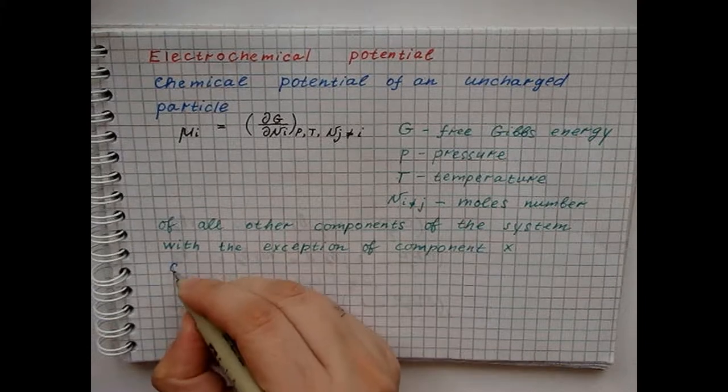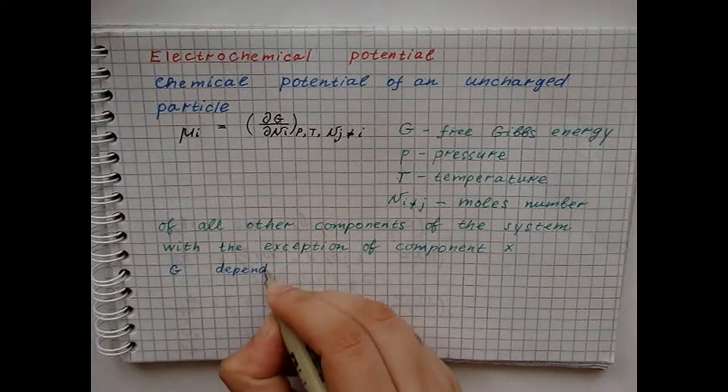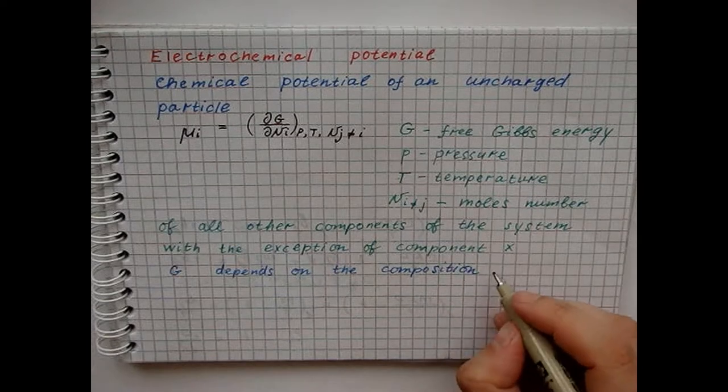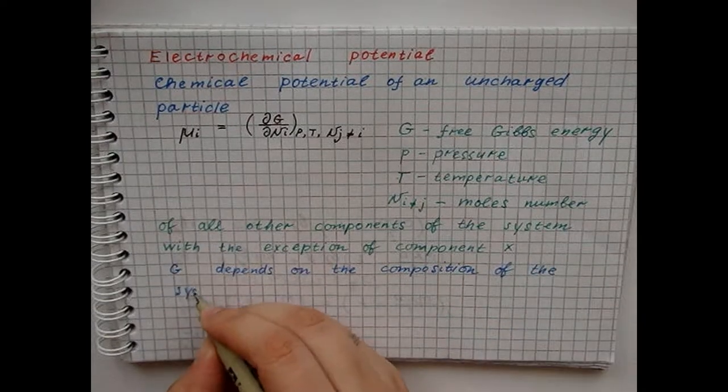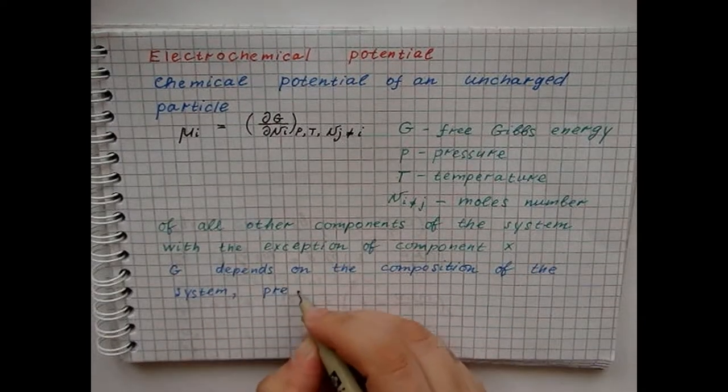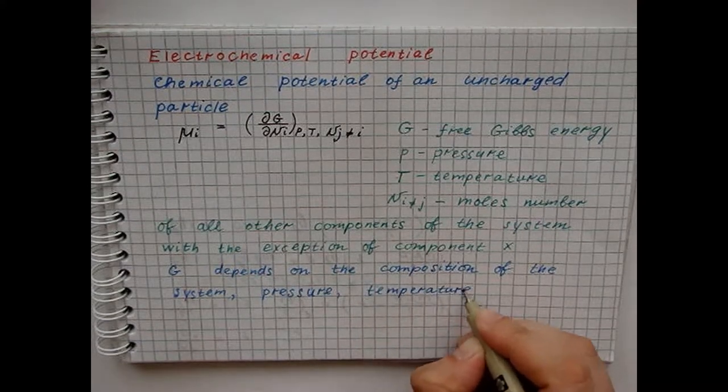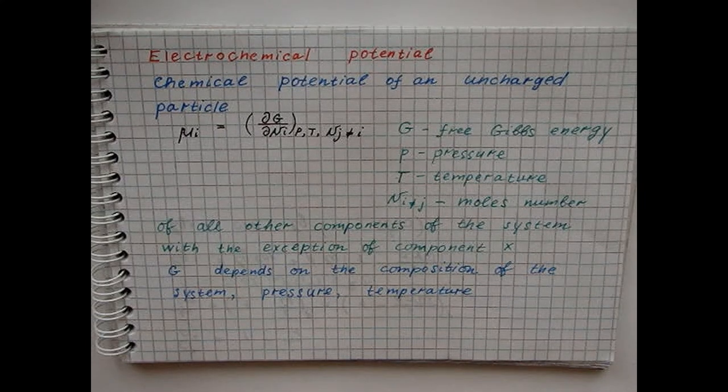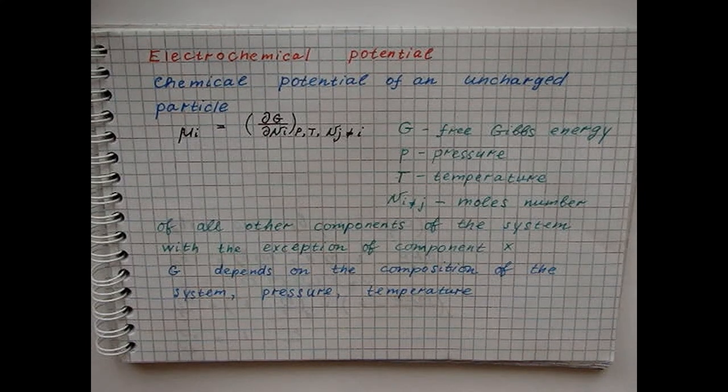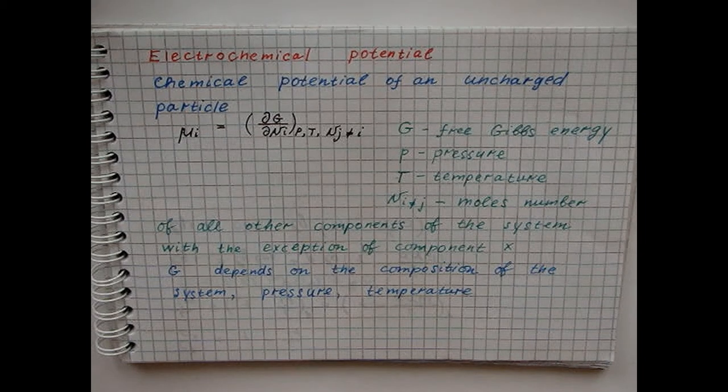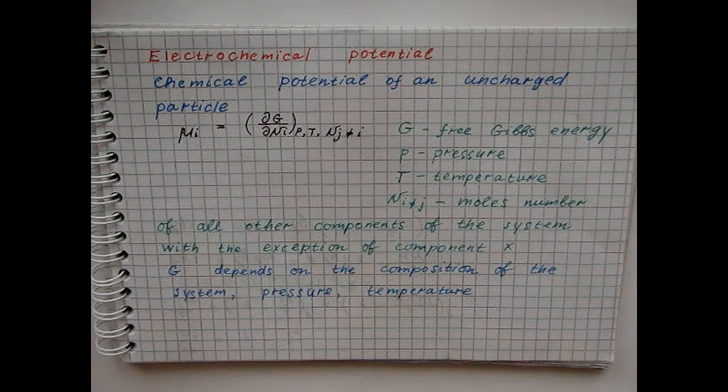Free Gibbs energy depends on the composition of the system, pressure and temperature. If the component I is represented by charged particles, then its state in the system, in addition to composition, pressure and temperature, also depends on the magnitude of the electric field.